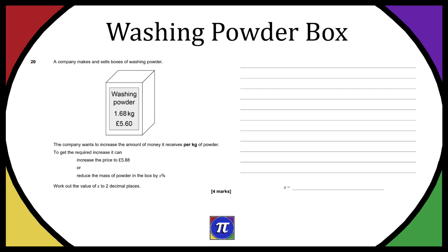We have a picture of the washing powder box: it's 1.68 kg for £5.60. The company wants to increase the amount of money it receives per kilogram of powder. To get the required increase, it can either increase the price to £5.88, or reduce the mass of powder in the box by x percent. Work out the value of x to two decimal places. This is a four-mark question.